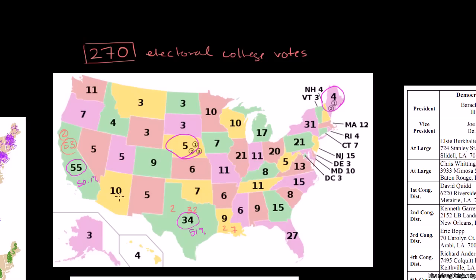So in a tiebreaker, the big states really lose out. Texas gets only one vote, California gets one vote, Alaska gets one vote, and Rhode Island gets one vote. Rhode Island would have just as much say as California over who will be president. They keep voting until someone gets a simple majority of the votes by state.